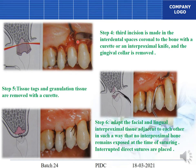The third incision — the interdental incision — is placed on both sides to remove the pocket wall tissue. The tissue tags and granulation tissue are removed with the help of curettage. The sixth step includes adapting the facial and lingual interproximal tissue adjacent to each other so there is no exposed interproximal bone at the time of suturing. Interrupted direct sutures are placed.